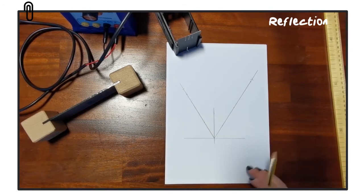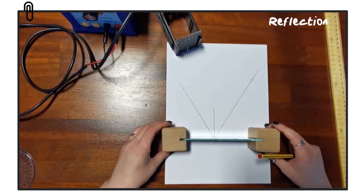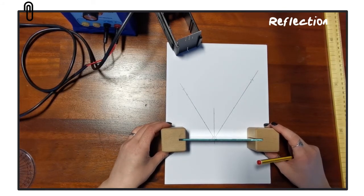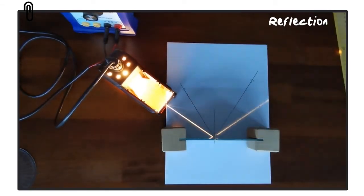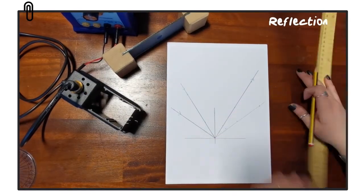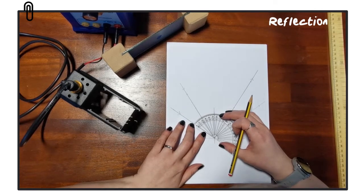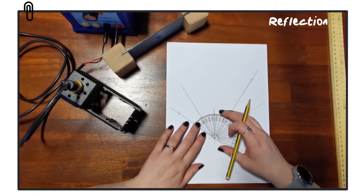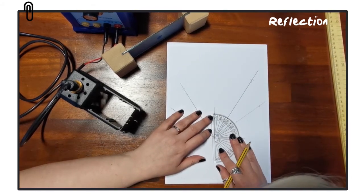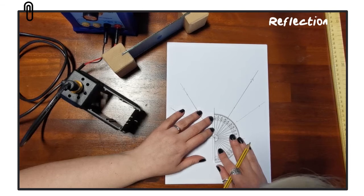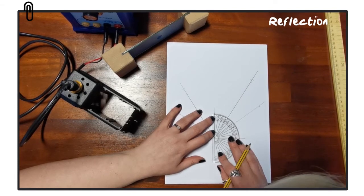We can then repeat this process for a range of different angles of incidence and measure the corresponding angles of reflection. So what we find is that no matter what angle of incidence that we choose, the angle of reflection is always the same. And this is known as the law of reflection, that the angle of incidence is equal to the angle of reflection.